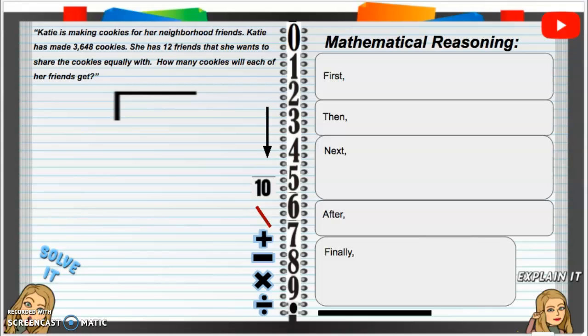Obviously, she's dividing up her cookies by 12 of her friends. First, we're going to put 3,648 as our dividend inside the house. We're going to put our divisor on the outside, which is divided by 12, so we are going to have 12 on the outside of our house.